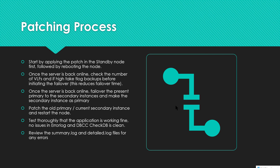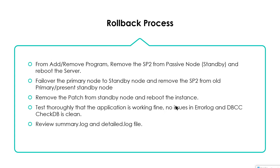Once the secondary node is back online, failover the present primary to the secondary instance, making the patched secondary the new primary. Then apply the patch to the old primary, which is now acting as the secondary instance, and restart that node as well. Check VLFs again before failing back. Test thoroughly — verify the application is working fine, no issues in the error log, DBCC CHECKDB is clean, and also review the summary.log and detail.log files to confirm no errors are logged.